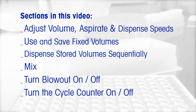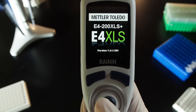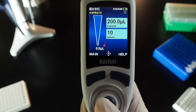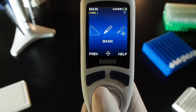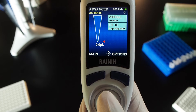Sections in this video: adjust volume aspirate and dispense speeds, use and save fixed volumes, dispense stored volume sequentially, mix, turn blowout on or off, and use the cycle counter. Press either button above the joystick to turn on the pipette, then press the button on the left. Move the joystick right or left to navigate to advanced and push the joystick up to choose it.